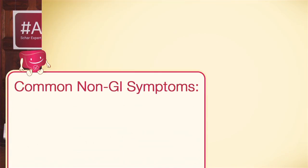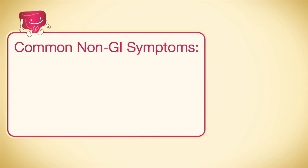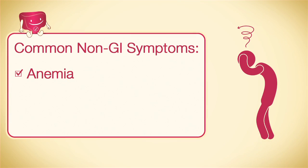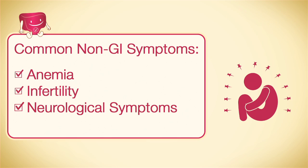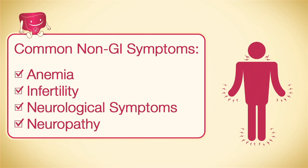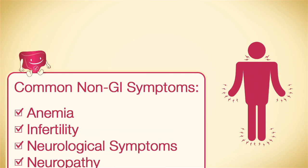However, many individuals, especially adults, present with non-GI symptoms, which could include anemia, infertility, bone loss, neurological symptoms of brain fog or migraines, or even neuropathy. Each individual reacts differently, and that's an important thing to remember.